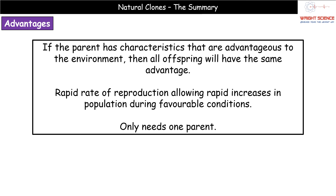Why do we have these natural clones? Why is it advantageous for organisms to create genetically identical copies of the parent? If that parent has characteristics that are advantageous to the environment it finds itself in, then because the offspring are genetically identical to the parent, they will all share that same advantage.